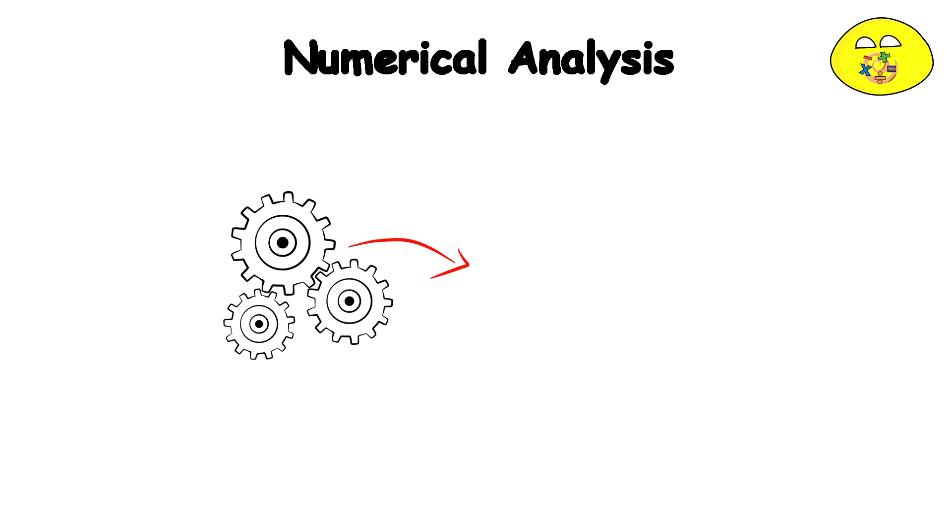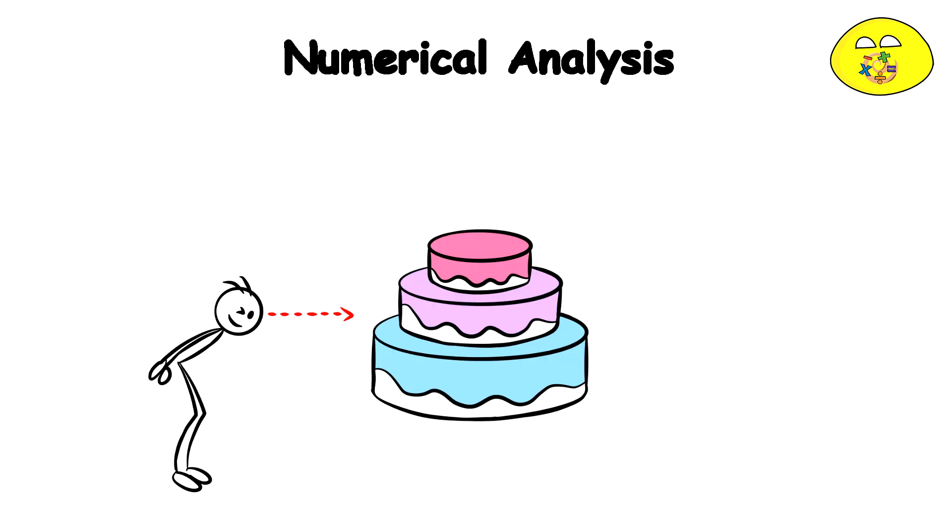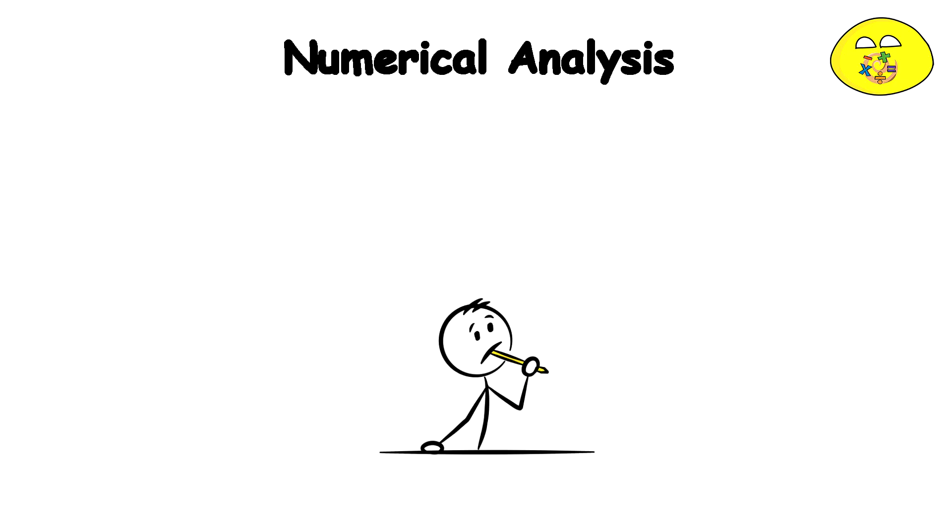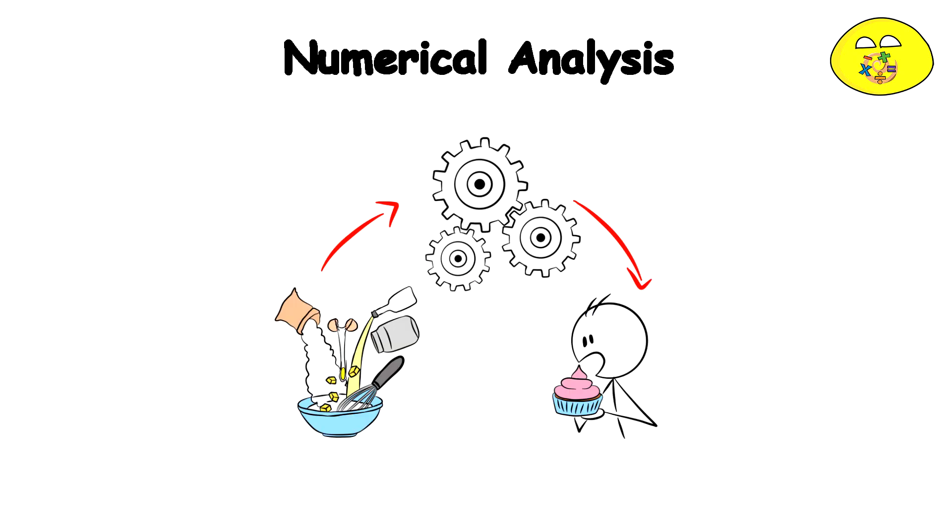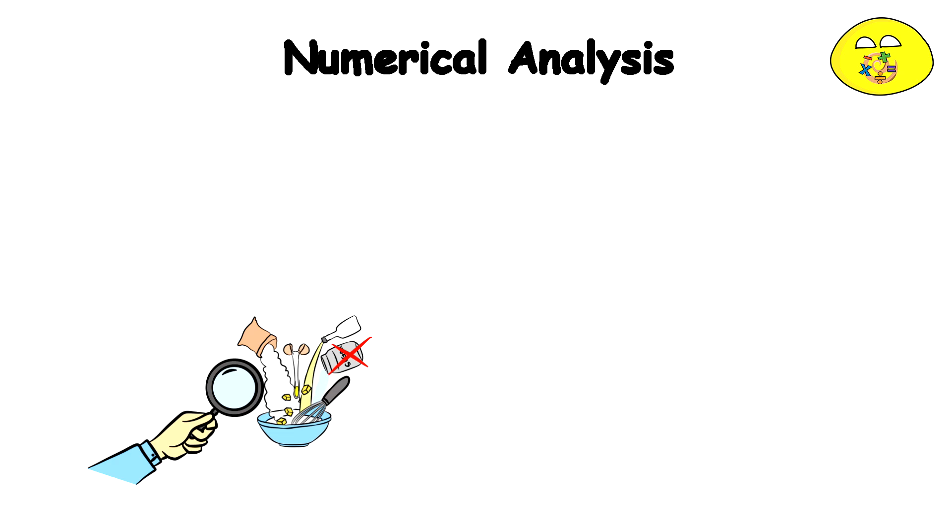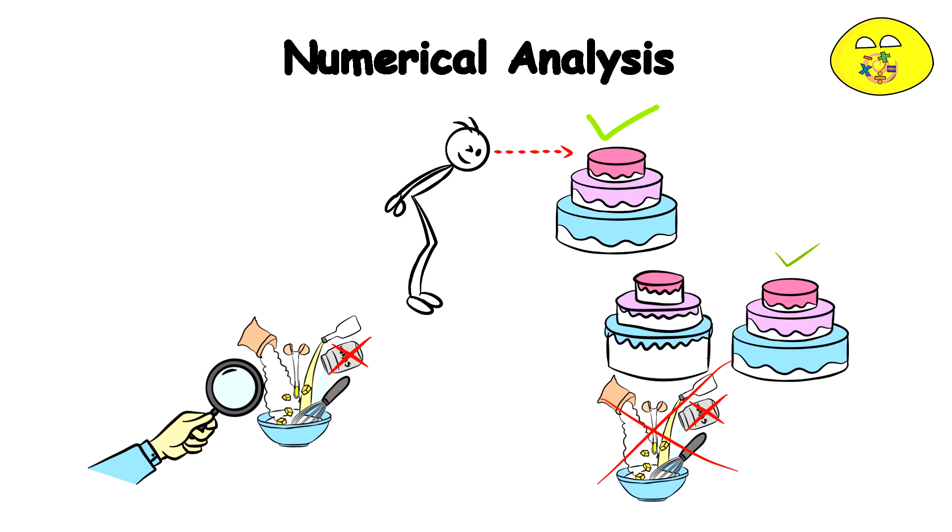Each time your adjustments get smaller because you're getting closer to the perfect cake. Just like in numerical analysis, you start with an initial guess, your first mix of ingredients, and iterate, make adjustments based on the results, taste test. Eventually, you found a mix that was close enough to the perfect cake, even if it wasn't the exact perfect recipe from the start.